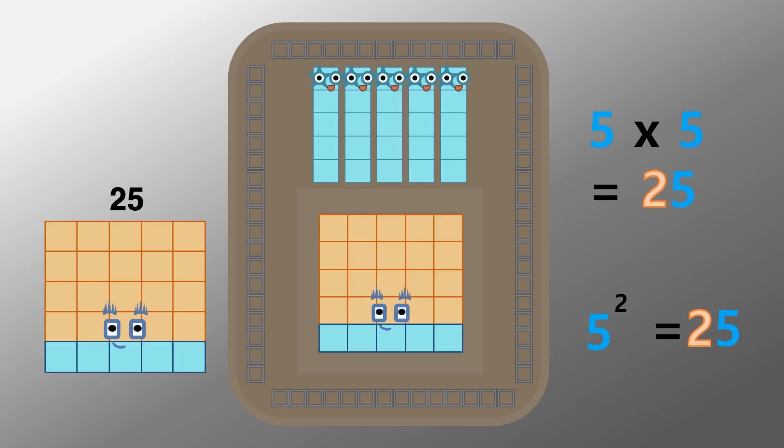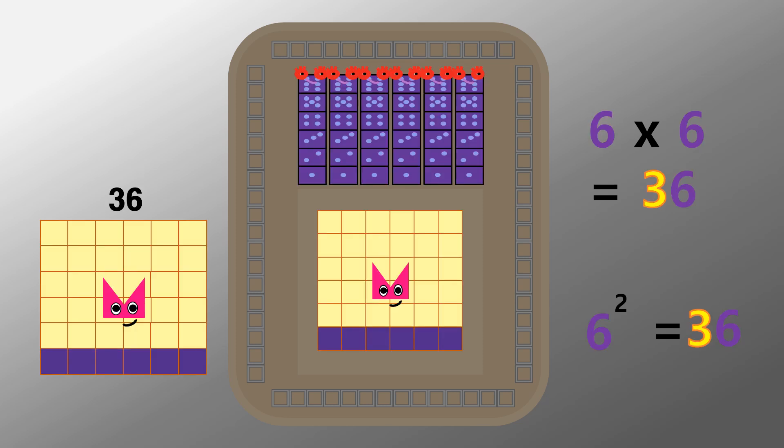I am twenty-five. Five by five. Five across by five down. I am thirty-six. Six by six. Six across by six down.